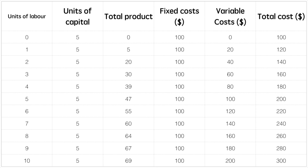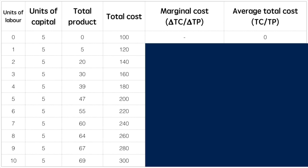To move forward from here we have to factor in our total product. I removed the columns for variable cost and fixed cost to make room for marginal cost and average total cost. You should notice that as labour increases, more product is made. Total product increases dramatically in the beginning but as diminishing returns set in, less and less is being added to the total. It matters because we need to consider the change in our total product to calculate marginal cost. Marginal cost is calculated by looking at the difference in total cost divided by the change in total product. This allows us to consider the cost of producing one more unit.